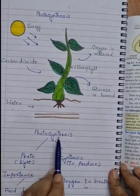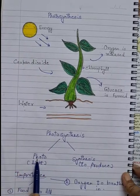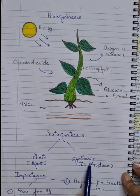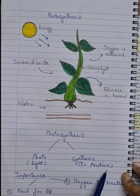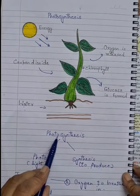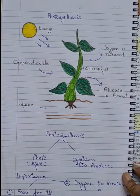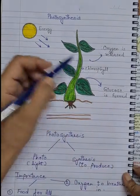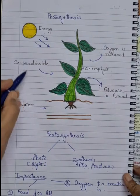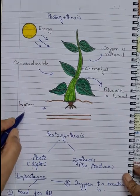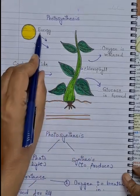If we split the term photosynthesis, it comes from photo and synthesis. Photo means light and synthesis means to produce. So photosynthesis is a process which occurs in green plants, by which green plants synthesize their food from carbon dioxide and water in the presence of chlorophyll, using light energy.